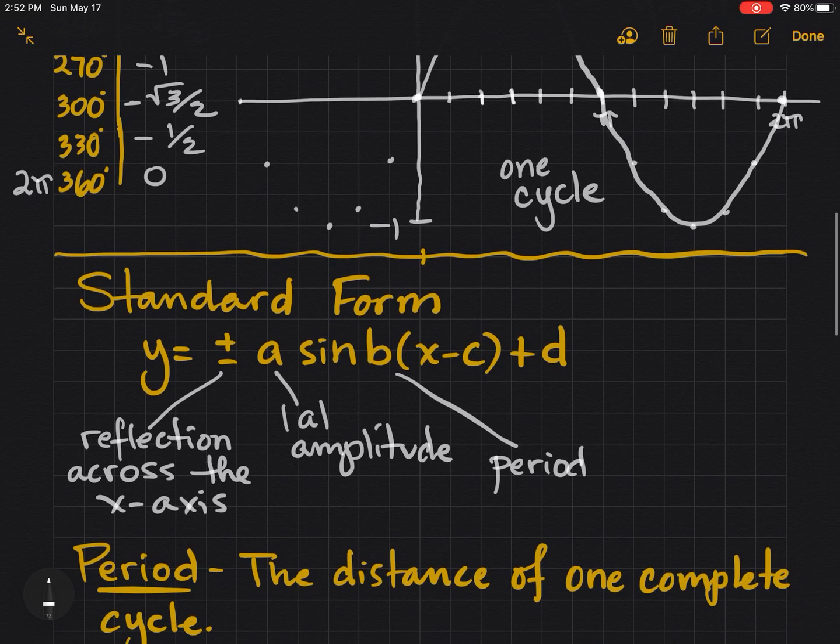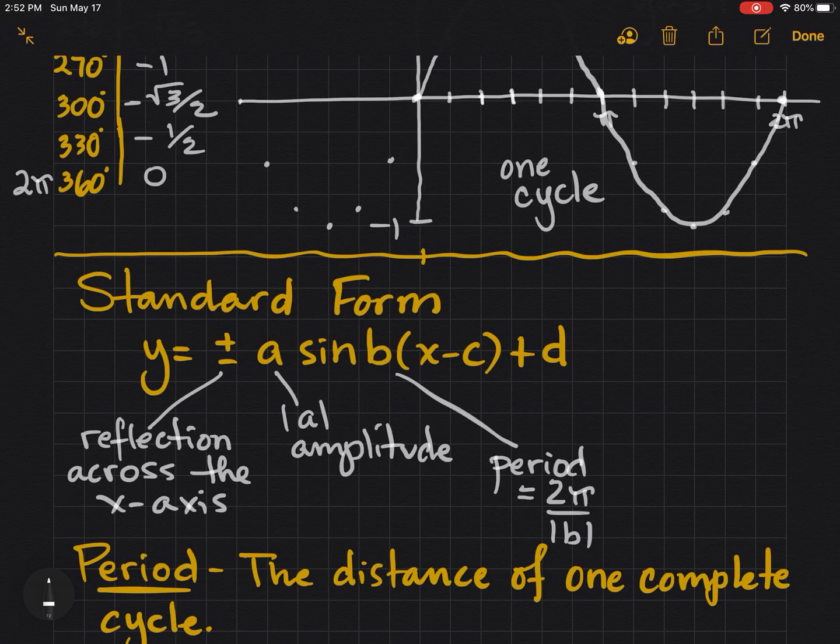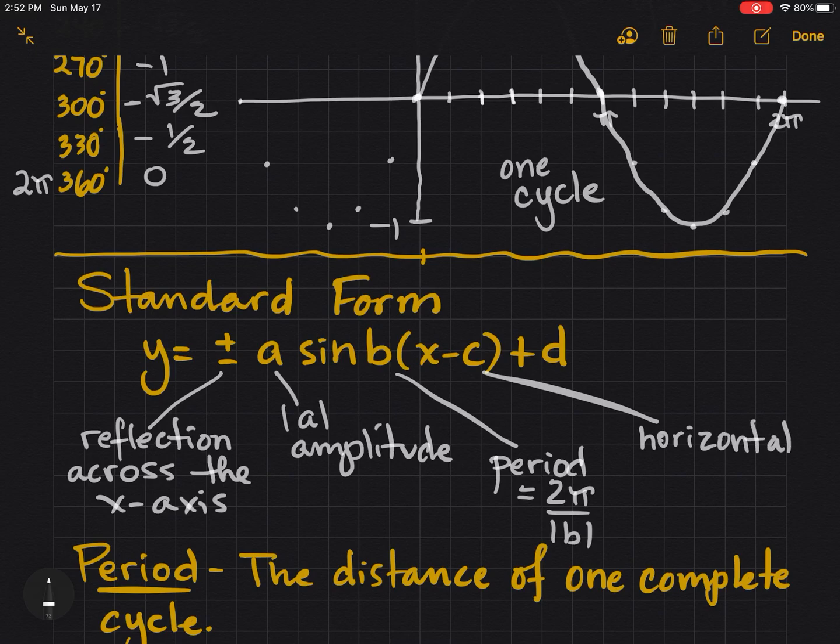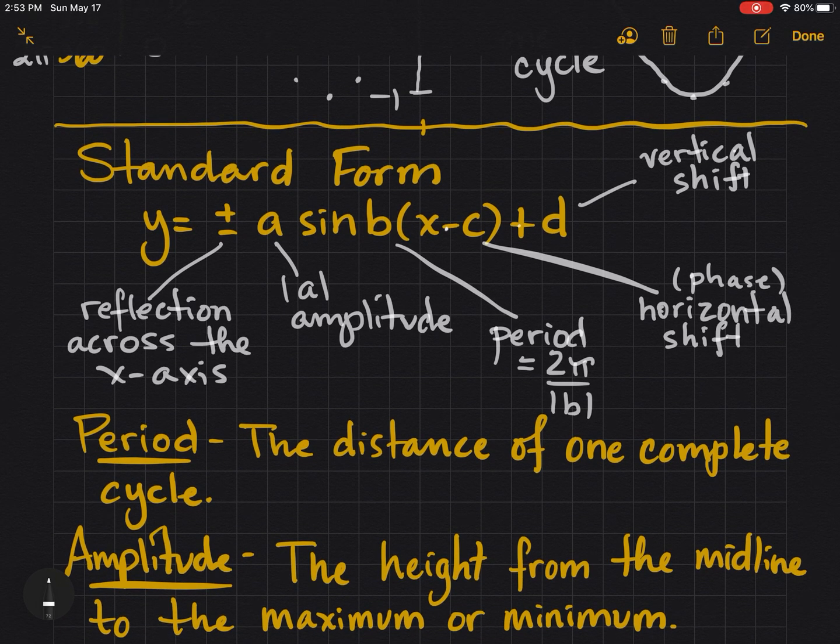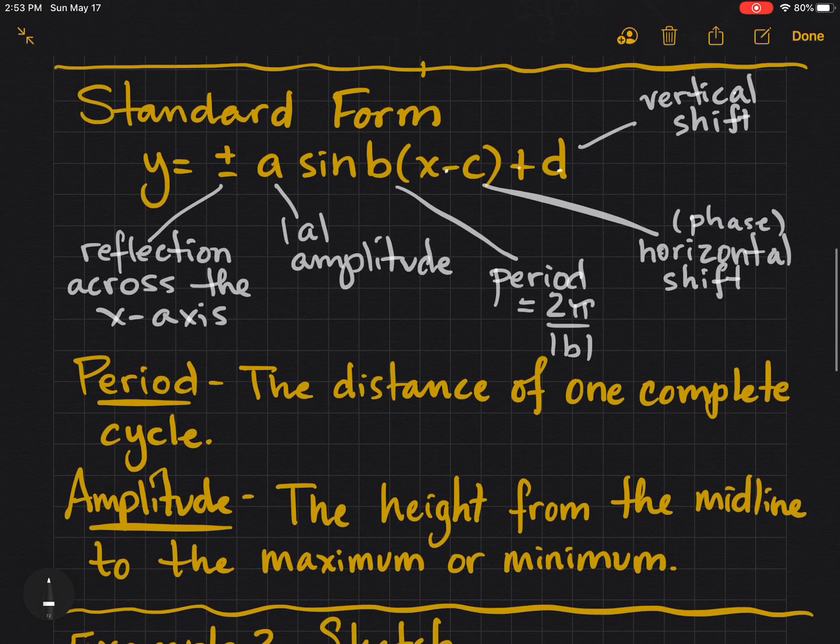B represents the period. We'll also define that. But the period equals 2 pi over the absolute value of B. C, just like in every other graph we've done this year, is a horizontal shift, which is also called a phase shift. And D is a vertical shift. Remember the horizontal shift is left and right, opposite of sign. That's why you see the negative here. And the vertical shift is up and down. And that's true to sign. So, positive means up. Negative means down when we're talking vertical.